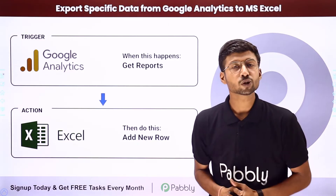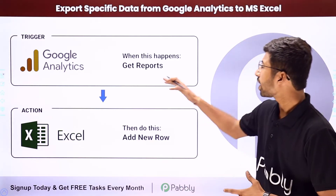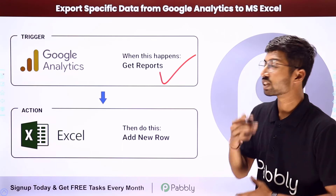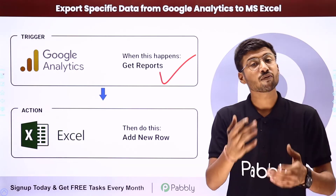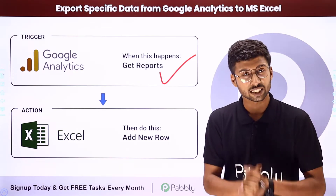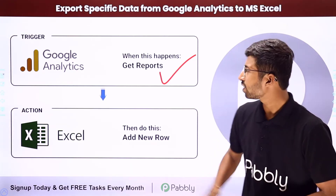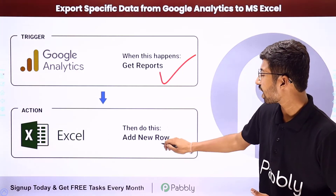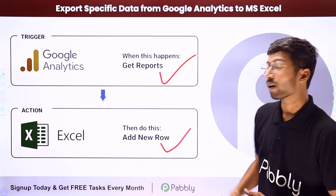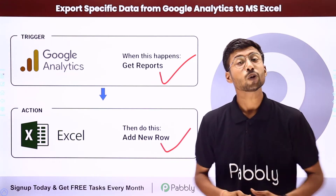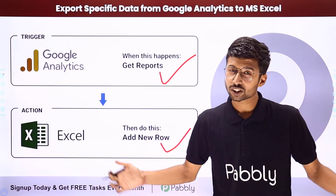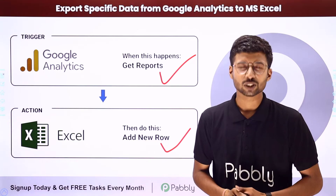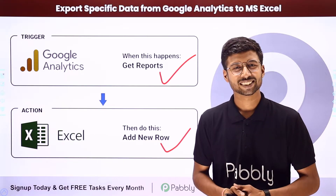To set up this automation, the trigger will be receiving the analytics data from Google Analytics, and the action will be the addition of that analytics data as a new row in Microsoft Excel. Now let's see how you can set up this automation — come with me to my screen.